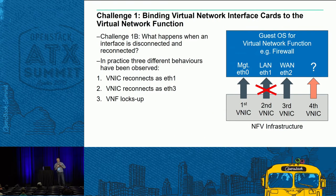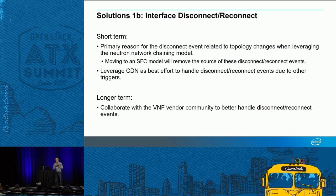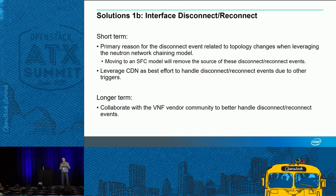A related part of the binding problem is what happens when a NIC goes down. Three behaviors have been observed: the device could show up as the same device again, which is usually okay; it could show up enumerated as a new device like Ethernet 3, in which case the VNF may not know what to do with it; or the network function could just lock up. Part of the reason relates to the data model deployed — if you chain neutron networks together and want to make a modification, you get a lot of connect and disconnect events. The short-term solution is to look at the SFC option. Longer term, VNF vendors need to properly handle these types of events in a cloud environment.